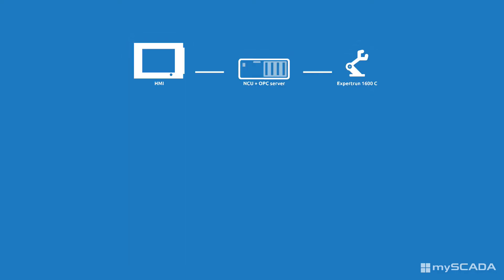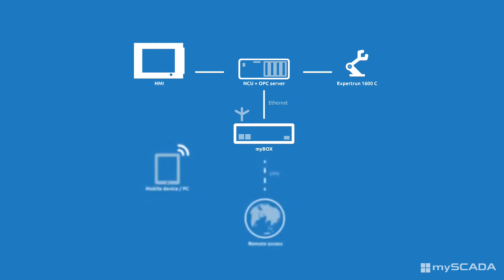The machine from Tosilene and the operator's panel communicate with a control system through an OPC server. MyBox is connected to the control system using an Ethernet cable. To get the visualization, the only thing needed is the IP address of the device — in this case, it's an Android tablet.